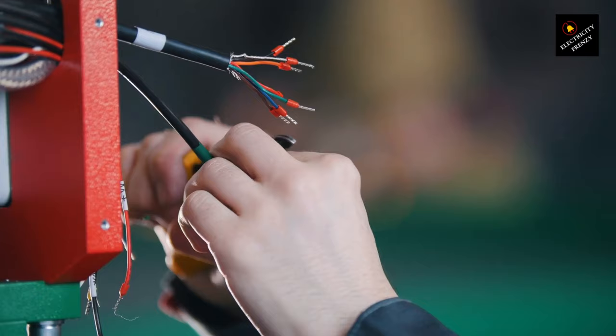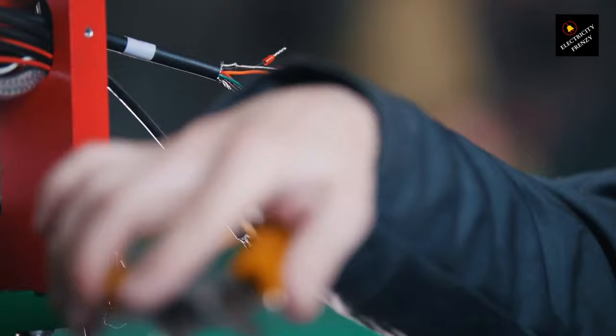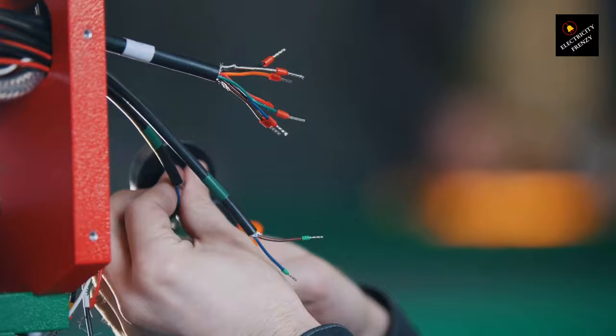Diagnosis: An electrician should perform a thorough inspection to identify any ground faults or short circuits. This may involve testing the wiring and conducting a visual examination of the dishwasher's electrical components.